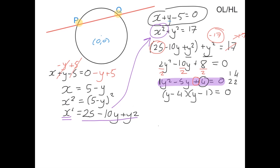When we have two things multiplying that equal 0, that means either the first bracket equals 0 or the second bracket equals 0. So we have y - 4 = 0 or y - 1 = 0, which means y = 4 or y = 1.